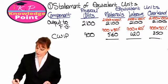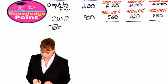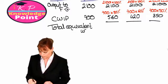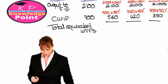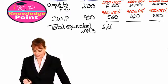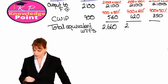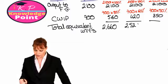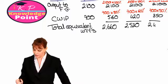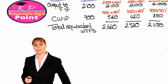Now we have our equivalent units for each of our two components, we just add them together to get our total equivalent units — separately for each cost type. For material costs, 2,100 plus 560 gives us 2,660. For labor, 2,100 plus 420 gives us 2,520. And for overheads, 2,100 plus 350 gives us 2,450. And that's step one complete.